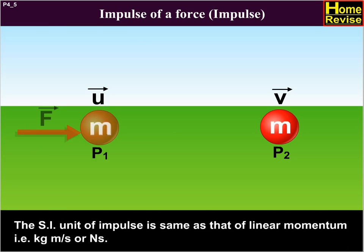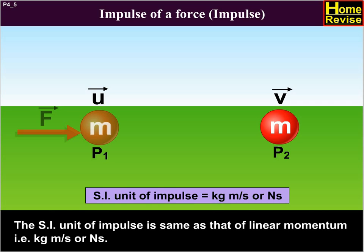The SI unit of impulse is same as that of linear momentum, i.e., kg meters per second or newton seconds.